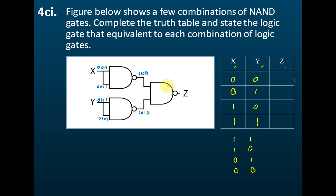And then these two inputs go to the third NAND gate. For the AND gate first: 1 AND 1 gives 1; 1 AND 0 gives 0; 0 AND 1 gives 0; 0 AND 0 gives 0. And after the NOT gate, the output becomes 0, 1, 1, 1.